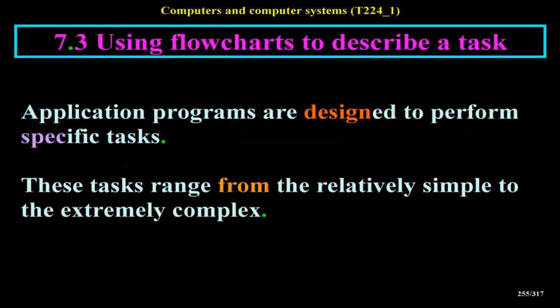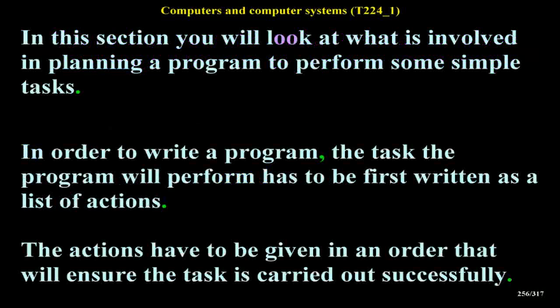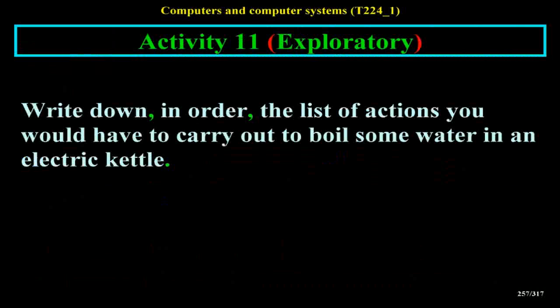Application programs are designed to perform specific tasks, ranging from the relatively simple to the extremely complex. In this section you will look at what is involved in planning a program to perform simple tasks. In order to write a program, the task must first be written as a list of actions in an order that will ensure the task is carried out successfully. Activity 11 asks: write down, in order, the list of actions you would have to carry out to boil some water in an electric kettle.